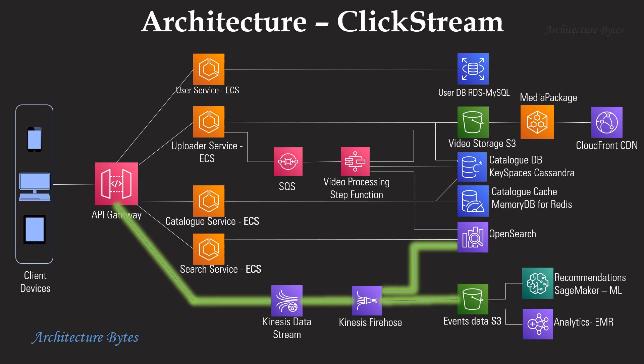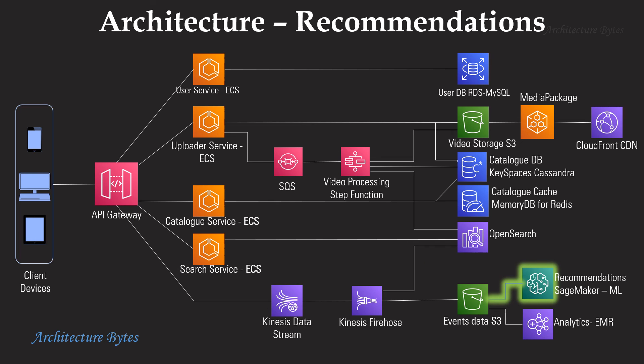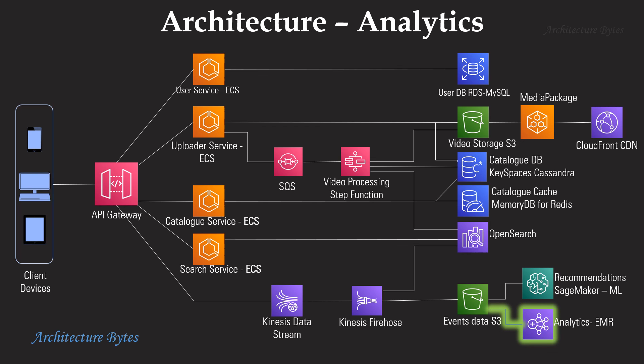All client-side events in the form of clickstreams are captured for further analysis and sent to Kinesis Data Stream. From here, Kinesis Firehose ingests the data into an S3 bucket and OpenSearch. Amazon SageMaker, a machine learning service, deploys machine learning models to find the best videos to recommend based on the user's history of viewing, searching, and browsing — all captured via the clickstream events. Amazon Elastic MapReduce, or EMR, can further analyze data in S3 to find important business insights.